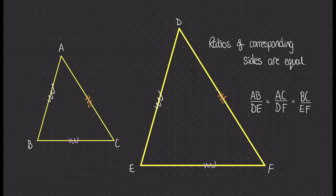We're going to start off with a fact that we should already know if we've studied similar triangles. The ratios between the corresponding sides in the two shapes are always going to be equal. We can see that AB to DE is the same ratio as AC to DF.